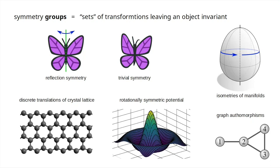We will also look at symmetries of manifolds, or isometries in particular, and symmetries of graphs. For this graph, flipping the third and fourth nodes would be a symmetry, but exchanging other nodes would not, since nodes one and two have different neighborhoods. Symmetry also plays a big role in physics — a crystal lattice has discrete translational symmetries, and a rotationally symmetric potential implies angular momentum conservation.